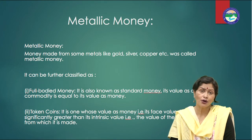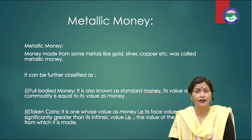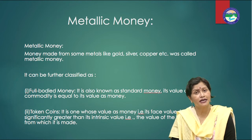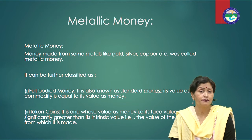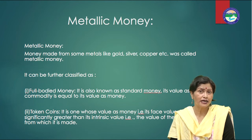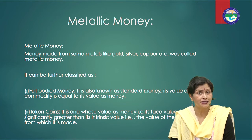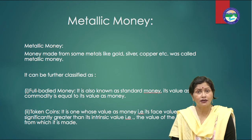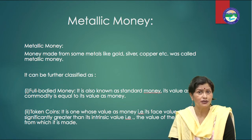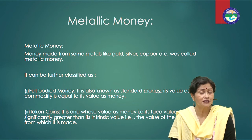Now let us talk about metallic money. The money that is made from some metals like gold, silver, copper, etc. is called metallic money. It can further be classified as full-bodied money, also known as standard money, whose value as a commodity is equal to its value as money. Number two is token coins — coins whose face value is significantly greater than their intrinsic value, i.e., the value of the commodity from which they are made.